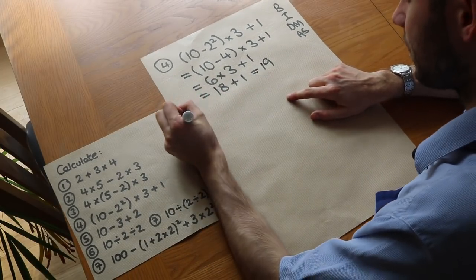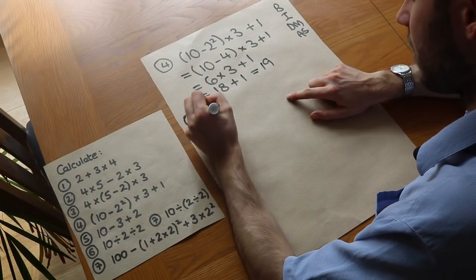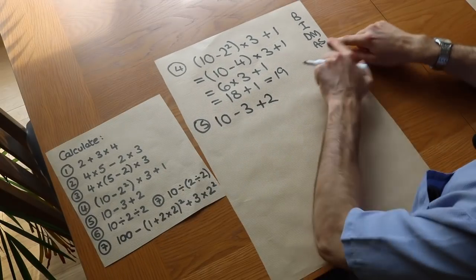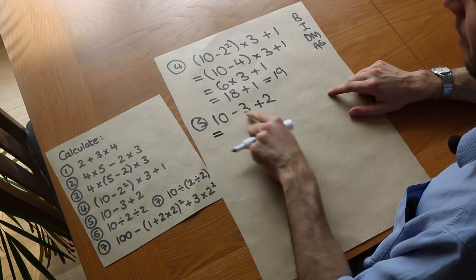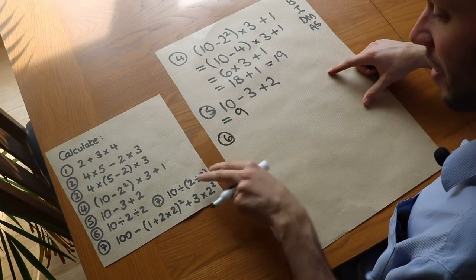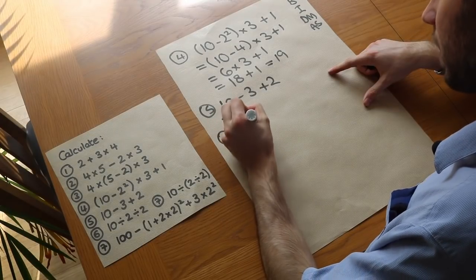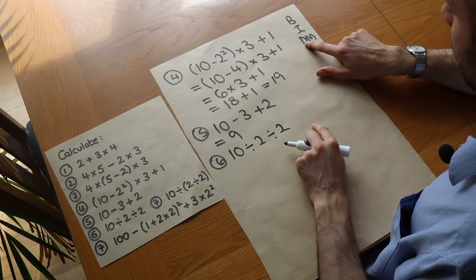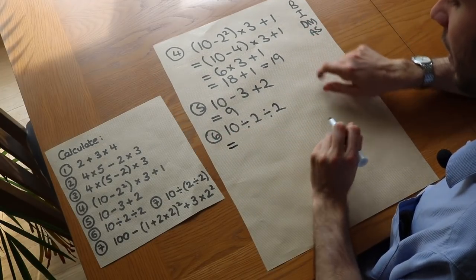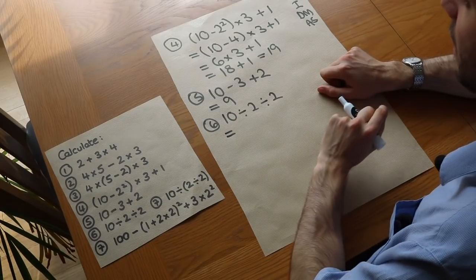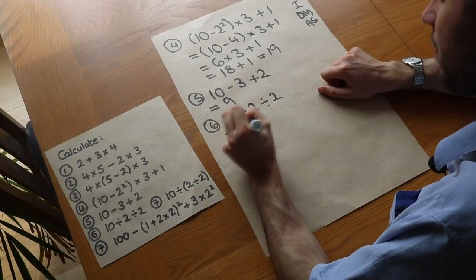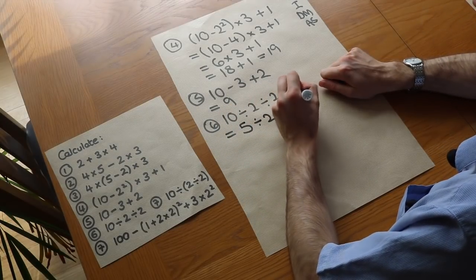Example 5: 10 minus 3 plus 2. We have subtraction and addition on the same level, so we go left to right. 10 minus 3 is 7, plus 2 is 9. Example 6: 10 divided by 2 divided by 2. We only have division, and we go left to right — the technical name for this is that division is left associative. So 10 divided by 2 is 5, then 5 divided by 2 is 2.5.